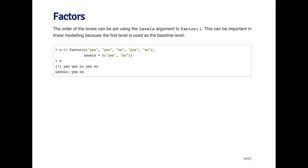The baseline level is just the first level in the factor, and the way this is determined by R is it's determined using alphabetical order.